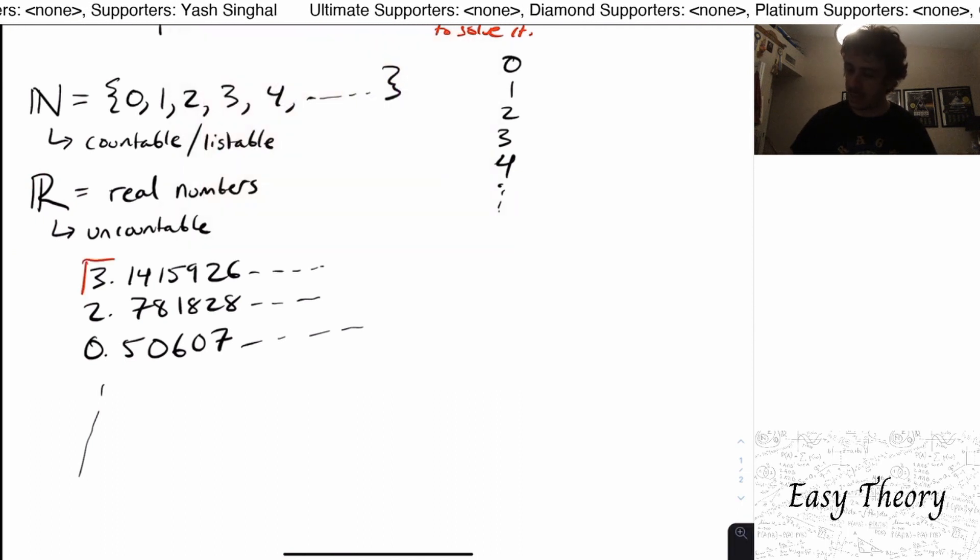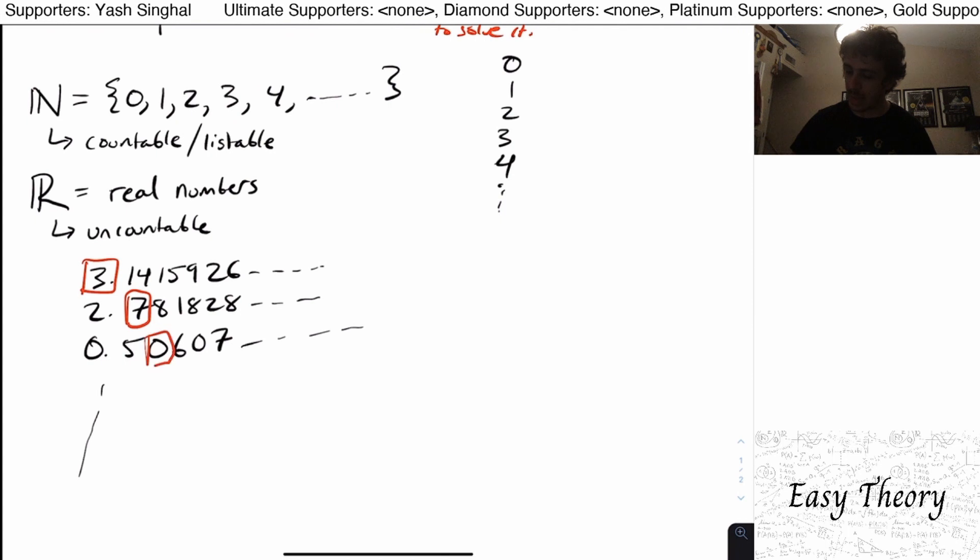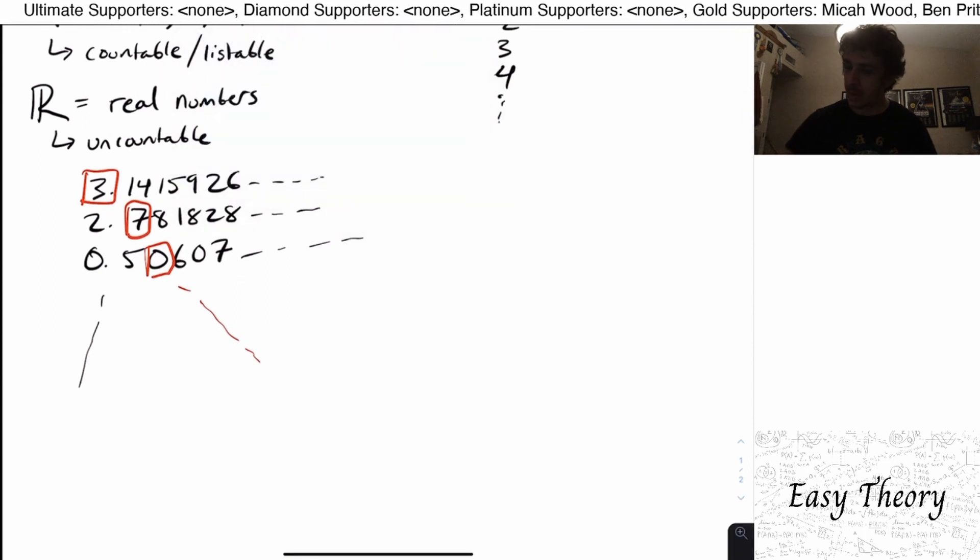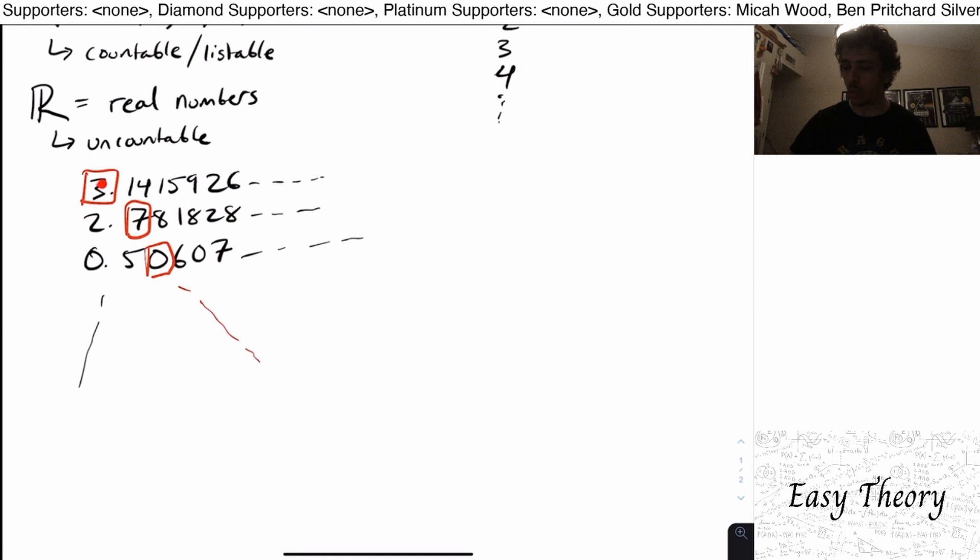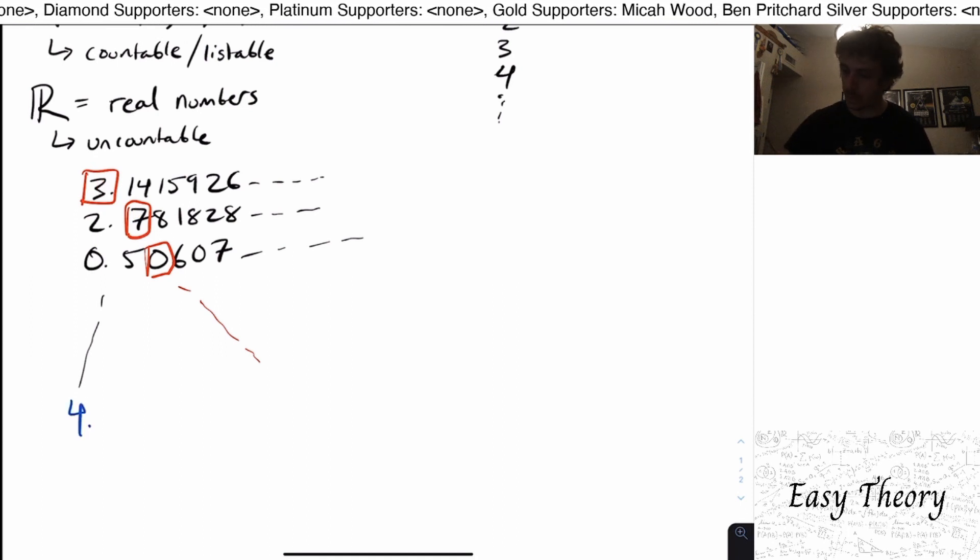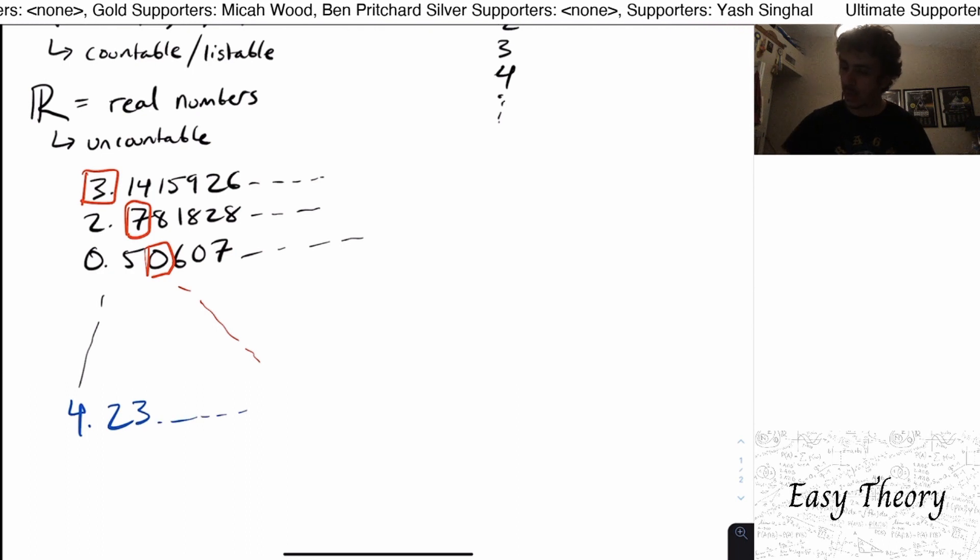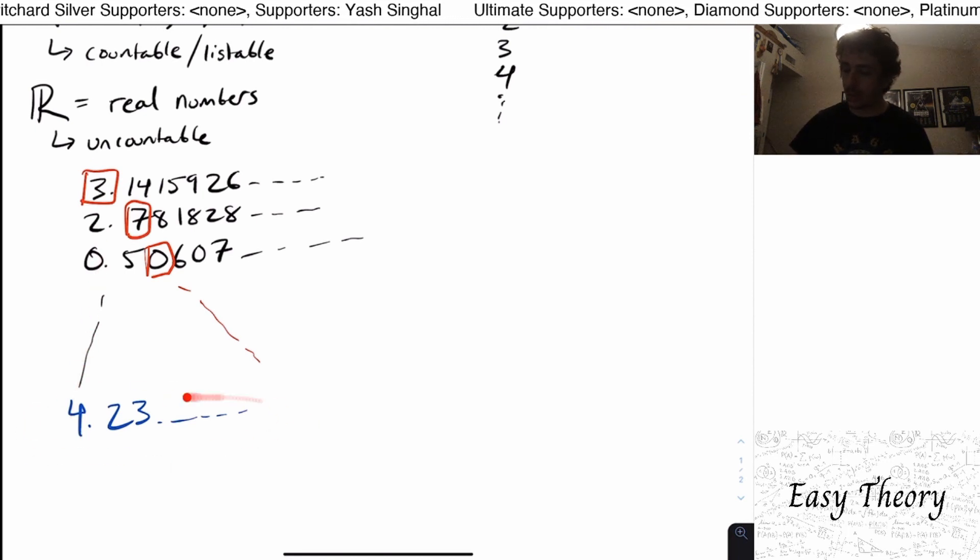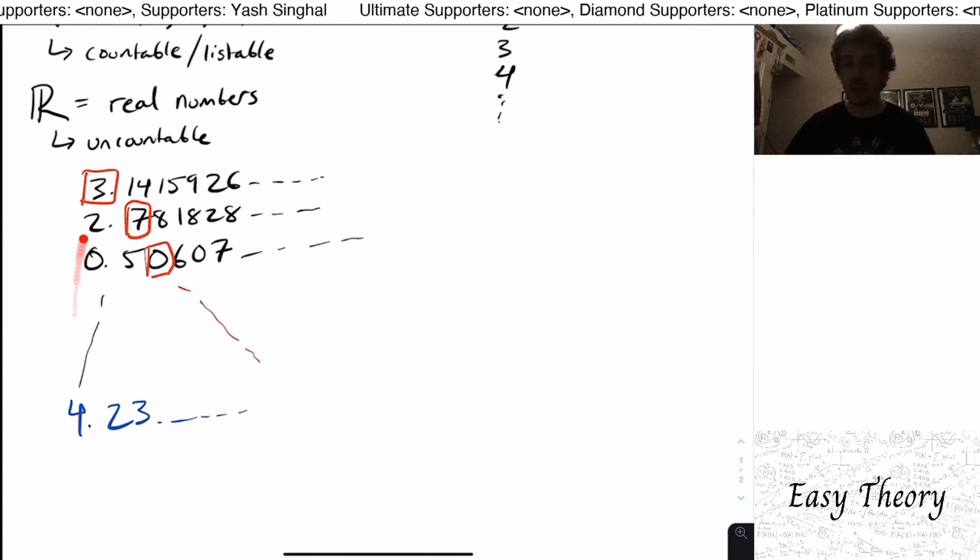Well if I look at these digits right here going along the diagonal and what I do is I create a number that is any digit other than this one in each position. So maybe like four because the four is different than the three. Let's just say maybe two because the two is different than the seven. Then maybe let's just say three for this position. And what I'm doing here is I'm going along the diagonal and looking at that corresponding position of that number in the list and picking a different one. Well this is clearly going to be a real number but it's different than every other number on the list.